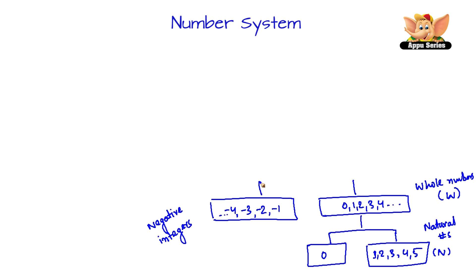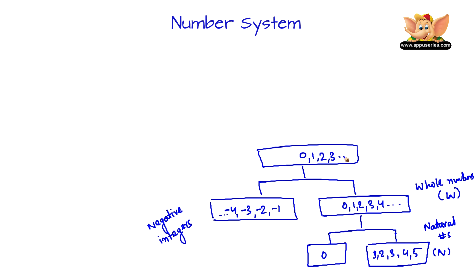Together, whole numbers and negative integers are called as integers. So that will be 0, 1, 2, 3, and so on, and to the left side of 0 we've got negative 1, negative 2, and so on. These are called as integers. Integers are denoted by the capital letter Z.